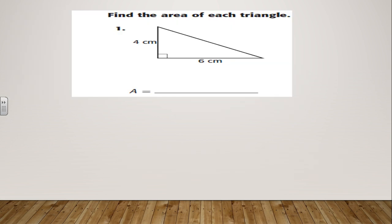Let's see the first question: find the area of each triangle. If we look carefully at the picture, you will see two numbers given. One represents the base and the other represents the height. Looking carefully, the base here is six and the height is four.